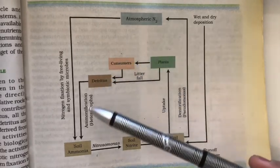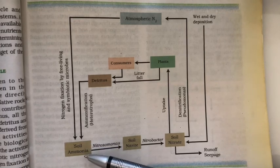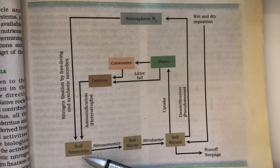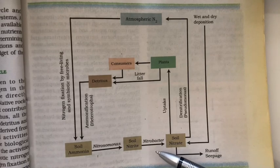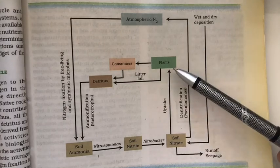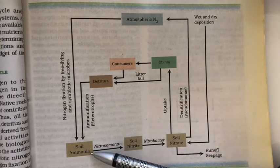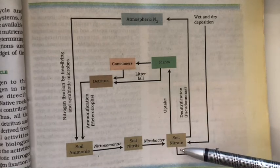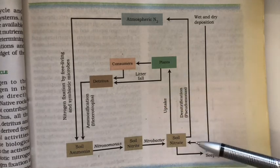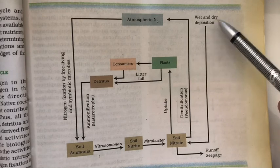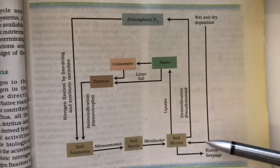In the nitrogen cycle, the atmosphere is the reservoir. Nitrogen is fixed by microorganisms, chemical activities, or lightning — this is nitrogen fixation. The fixed nitrogen in soil exists as ammonium ions, which are converted to nitrites by microorganisms like Nitrosomonas, and then to soil nitrates by Nitrobacter. Plants take up soil nitrates, which are consumed by animals. When organisms die, ammonification returns nitrogen to the soil as ammonia. Some nitrogen is also lost through runoff, and there can be wet and dry deposition directly from the atmosphere.